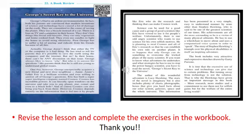Let's begin page number 57, George's secret key to the universe, a book review. George's dad is an ardent environmentalist. In fact, both his parents are convinced that modern inventions of science and technology have caused a lot of damage on the earth. They are committed to the cause of saving the planet. They use a bicycle instead of a car. There is a ban on TV and computers in their house. They don't buy things like bread, biscuits. They eat only vegetarian and home cooked food. They even use candles to light the house to avoid using electricity.